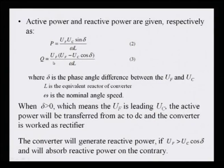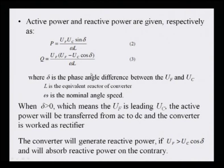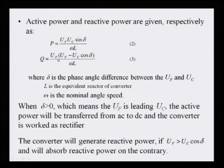The reactive power Q can be controlled independently by controlling U_c. If U_f is greater than U_c × cos δ, then Q is positive, meaning the converter generates reactive power on the rectifier side. The reverse gives reactive power absorption. By independently controlling δ and U_c, both active power P and reactive power Q can be controlled independently — this is the fundamental capability of HVDC VSC technology.